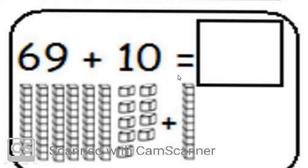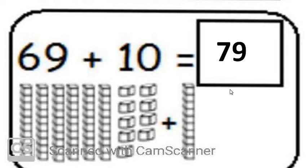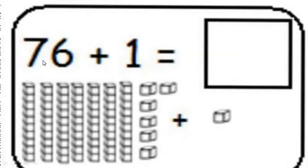Look — the sum is 69 plus 10. These are 69 blocks. We have to add 10 more, so we start counting after 69: 70, 71, 72, 73, 74, 75, 76, 77, 78, and 79. Should I write 79? Yes, I should. Next — 76 plus 1. If I want to add one more to 76, which number will I get? I will get number 77.